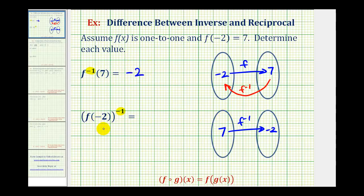And then for our second example, we first need to find the value of f of negative two, which is given — it's equal to positive seven. So this is equal to seven raised to the power of negative one, which is equal to the reciprocal of seven, which is one seventh.